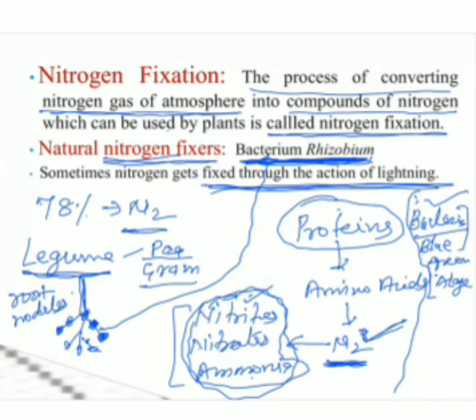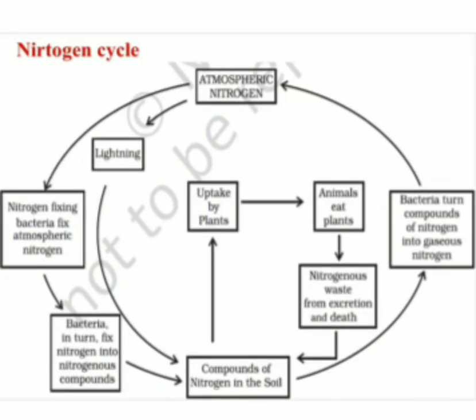Now, how does nitrogen come into the plant's body, then go to the animal body, and again return to the atmosphere? If plants keep absorbing nitrogen, the 78% nitrogen in the atmosphere would be reduced. So how does nitrogen return to the atmosphere? Through the nitrogen cycle.